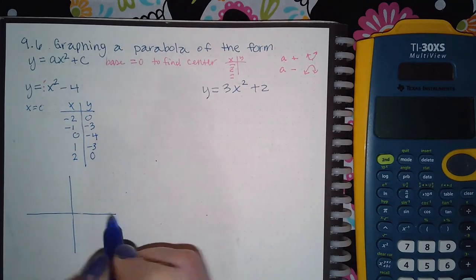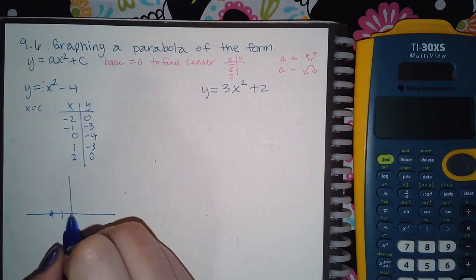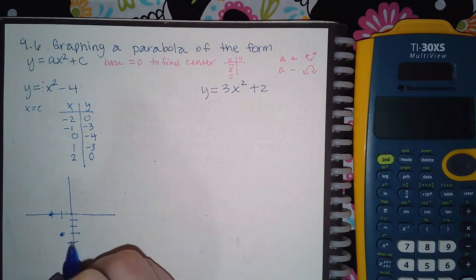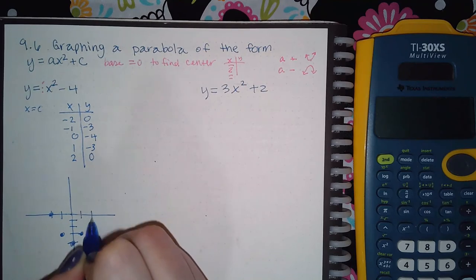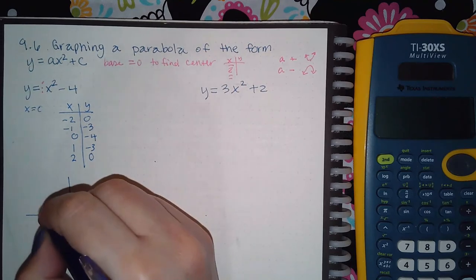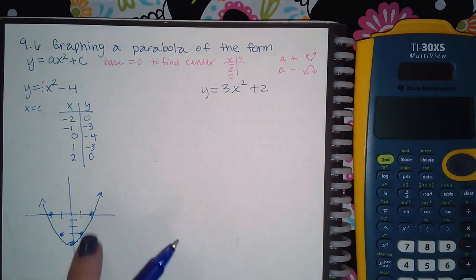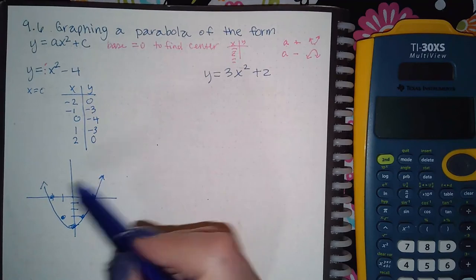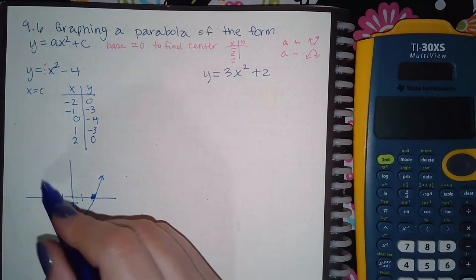So when I graph this, I'm going to have negative two and zero, negative one and negative three, zero and negative four, one and negative three, and two and zero. And so the parabola looks like this. So you draw your points. I was off right there, but you get the idea. When you draw the points in Aleks, just make sure you hit the graphing icon and it should draw the curve for you.